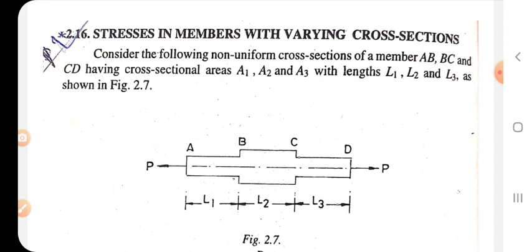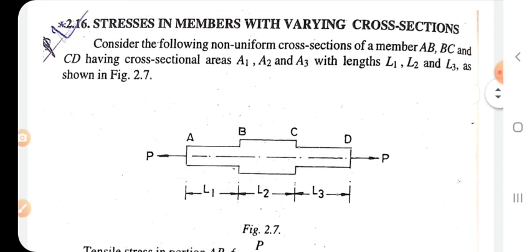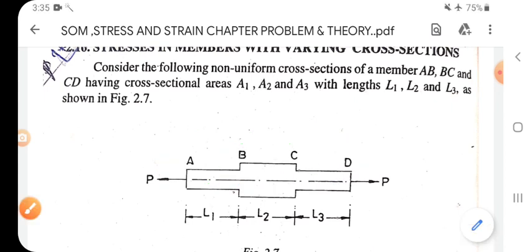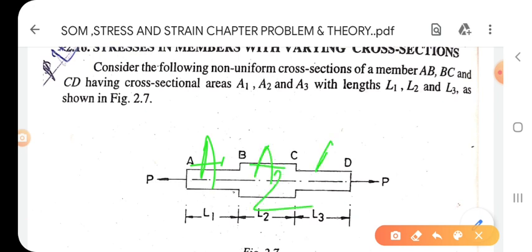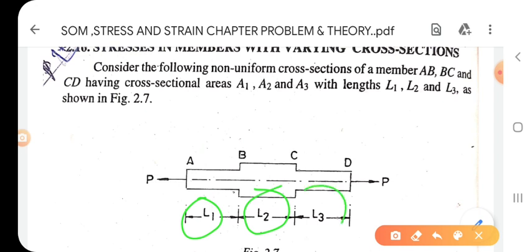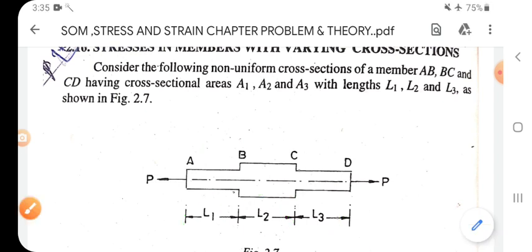Stress in members with varying cross section. Consider the following non-uniform cross sections of a member AB, BC and CD having cross sectional areas A1, A2 and A3, with lengths L1, L2, L3. The figure is clear.